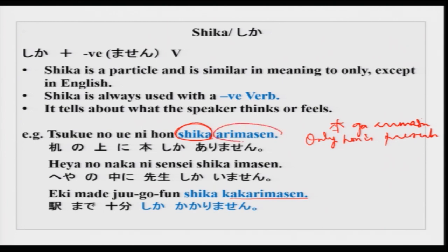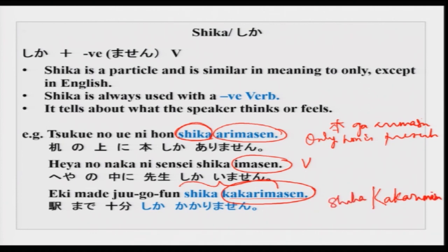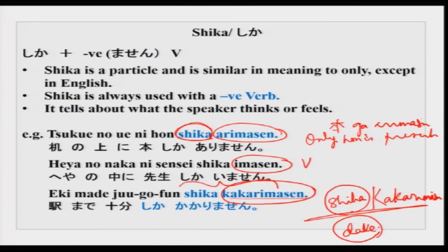Another very important thing to remember — especially if you want to appear for JLPT N5 — is that shika will be used with kakarimasu. Jugohun shika kakarimasen — it takes only 15 minutes to the station. Though it is used in the negative, please remember the meaning is very different. There is nothing as shika arimasu or shika imasu or shika kakarimasu — it is always in the negative, please remember.